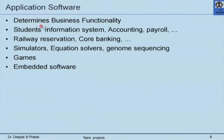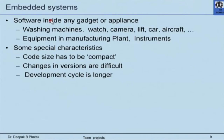We tell them about application software which determines business functionality and give examples: student information systems, railway reservation systems, simulation systems, equation solvers, and games. We tell them about embedded software, and many of us believe embedded software is increasingly becoming an extremely important and critical activity where larger numbers of professionals are engaged. We typically spend one more slide giving examples of what embedded systems are, and students find it very interesting.